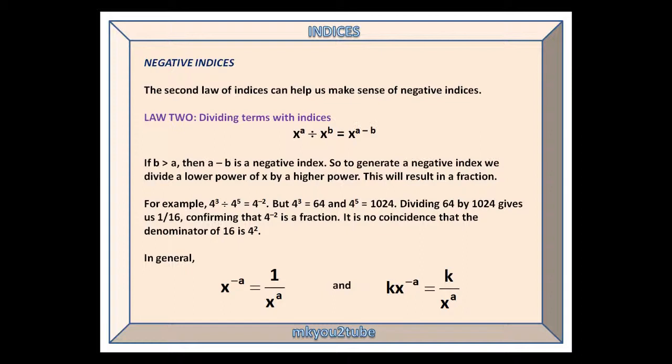In general, x^(-a) is 1 divided by x^a, and k × x^(-a) is k divided by x^a.